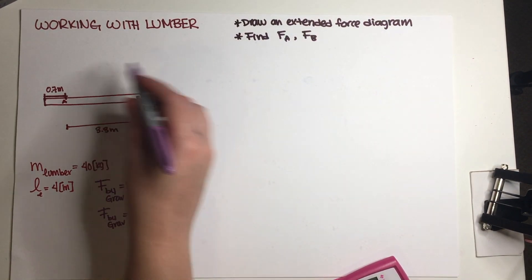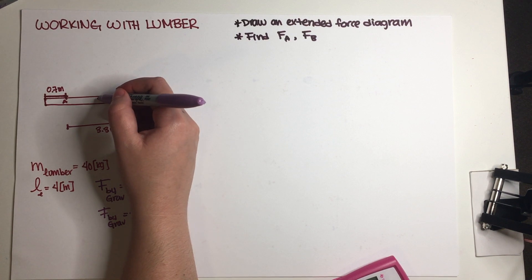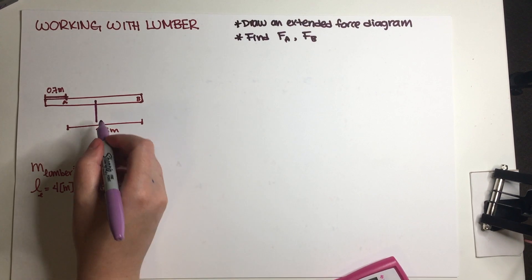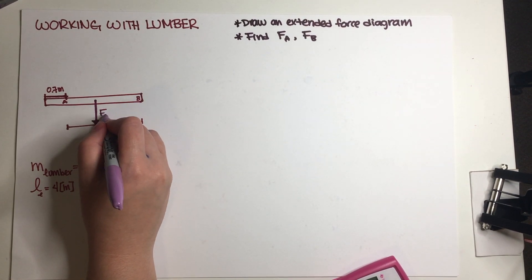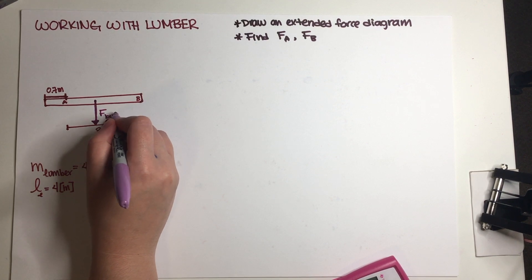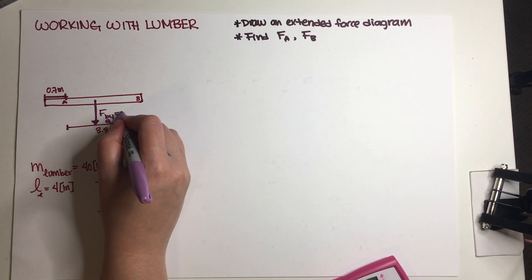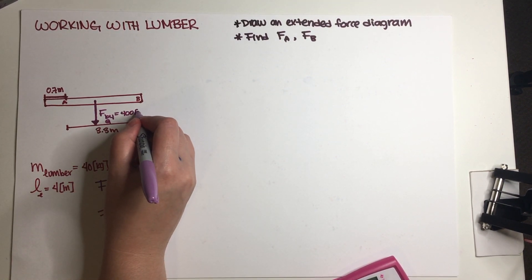We do have a force by gravity, and remember this is always going to be acting in the center point of your figure. So force by gravity goes right here in the center, and this is going to be exactly 400 newtons going down.